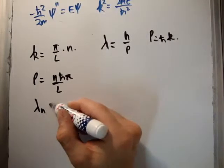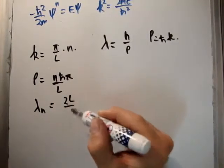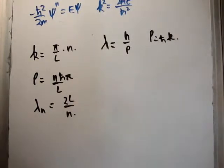Or what we can write is that lambda sub n is equal to twice L over n, if you want to put it that way.